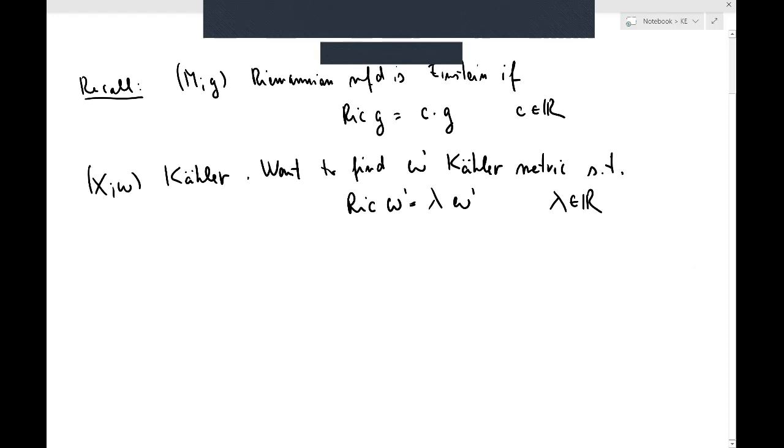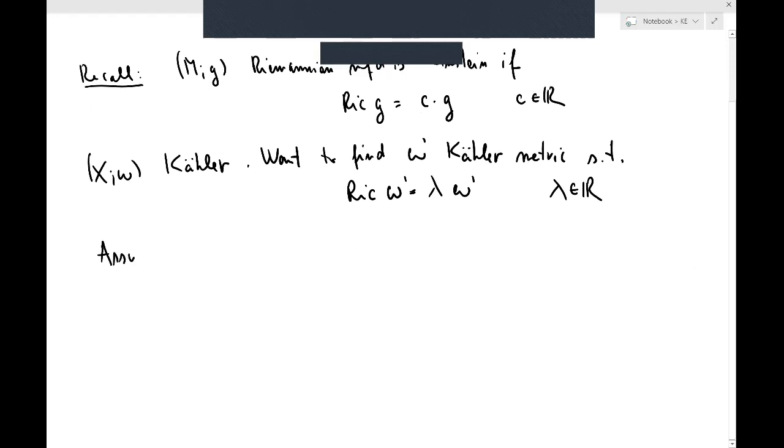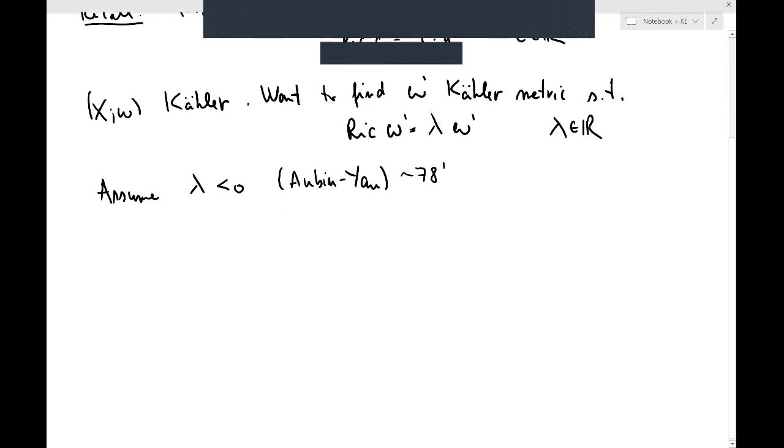Now here also the signature of lambda is going to be important, and historically the first case to be worked out is the one we will be focusing on. So we're going to assume lambda is negative, and I will describe some of the work of Aubin-Yau around 1978.